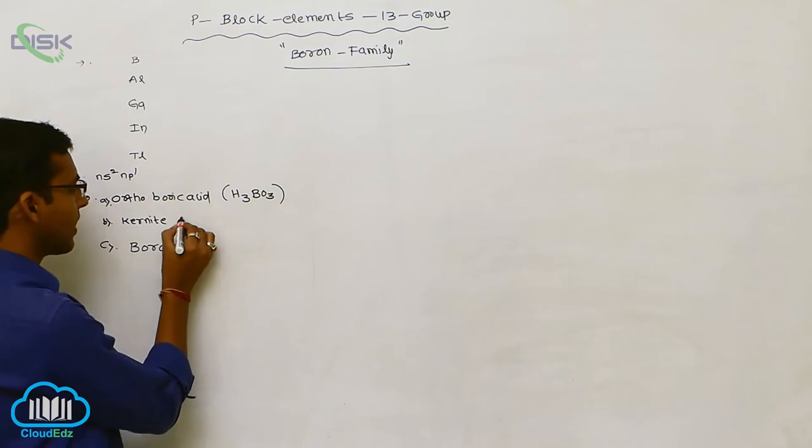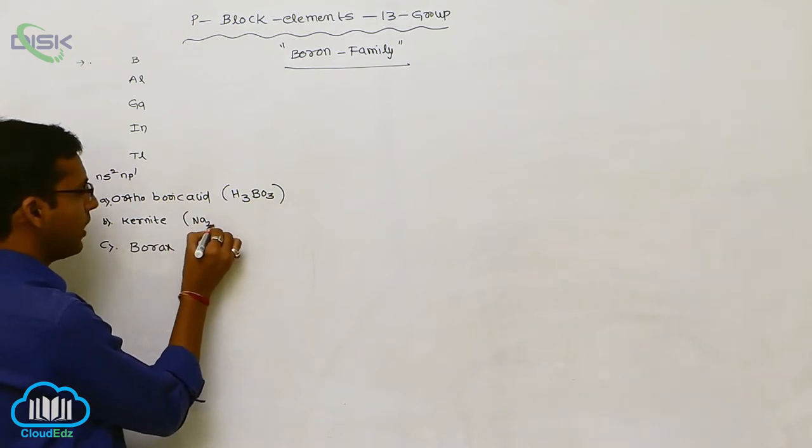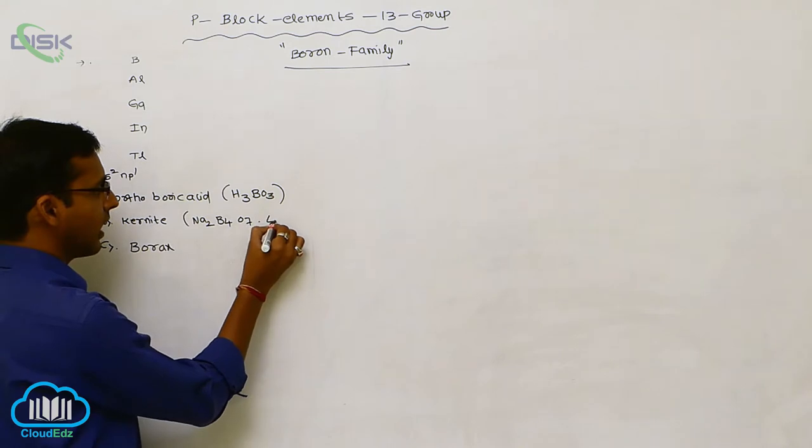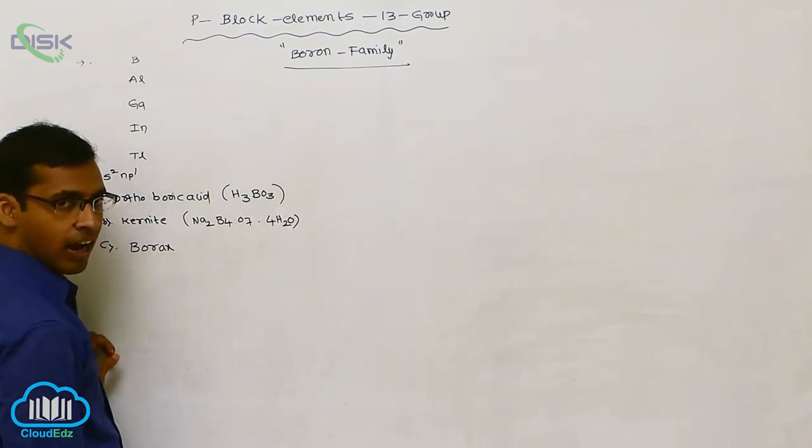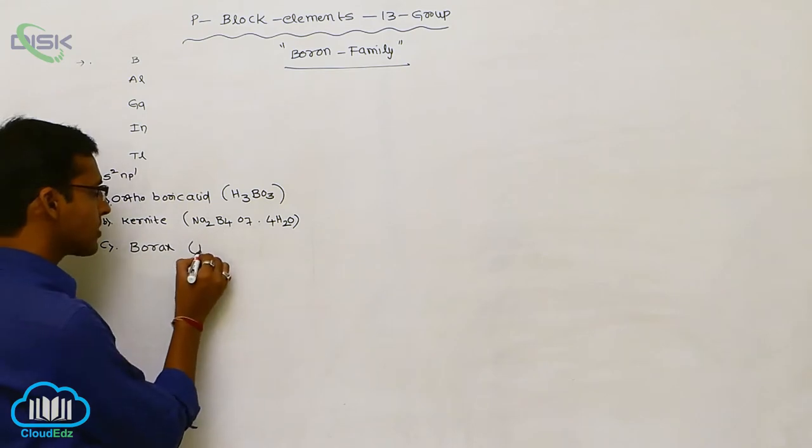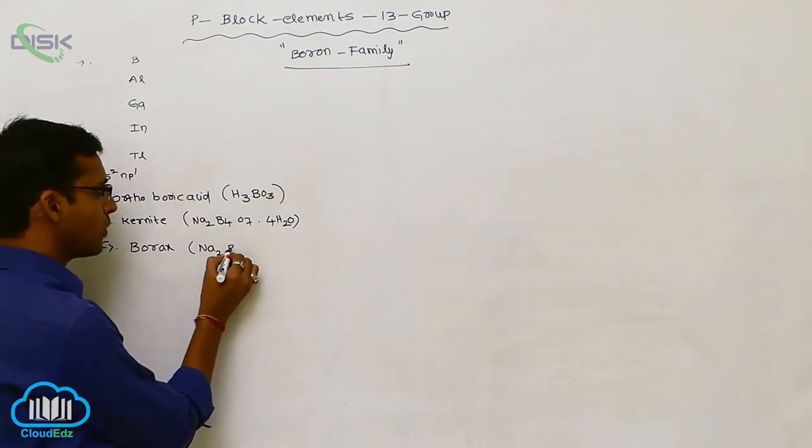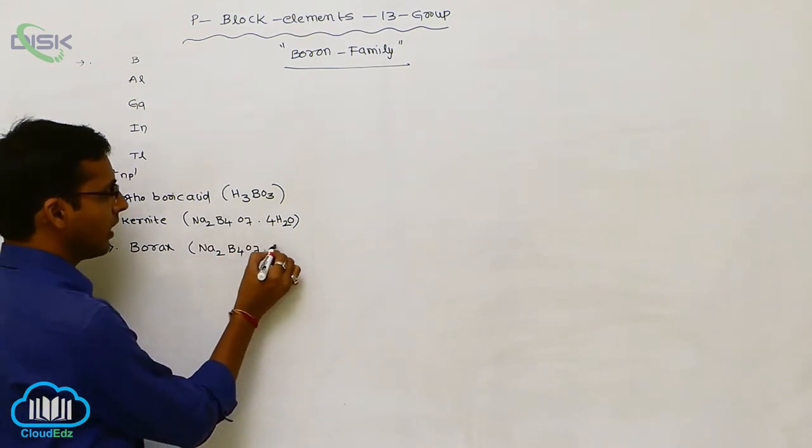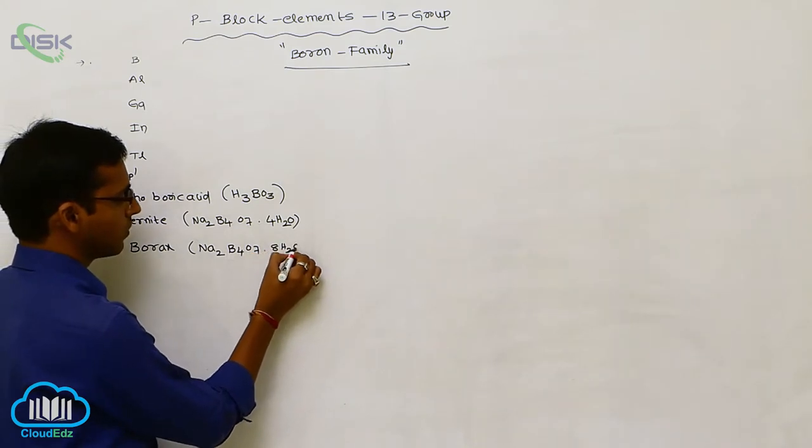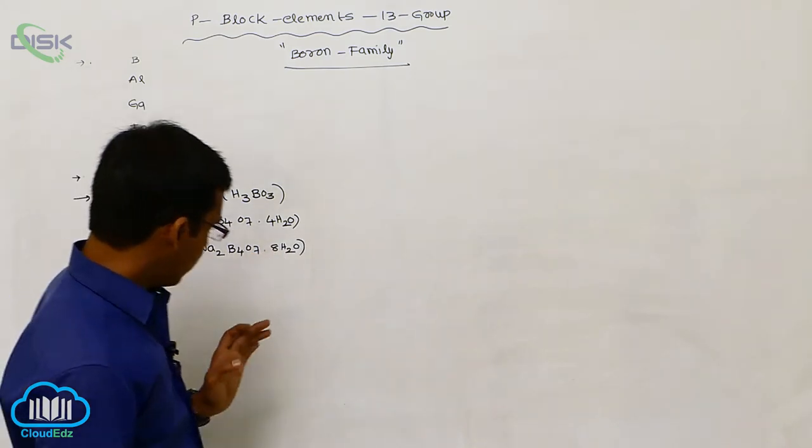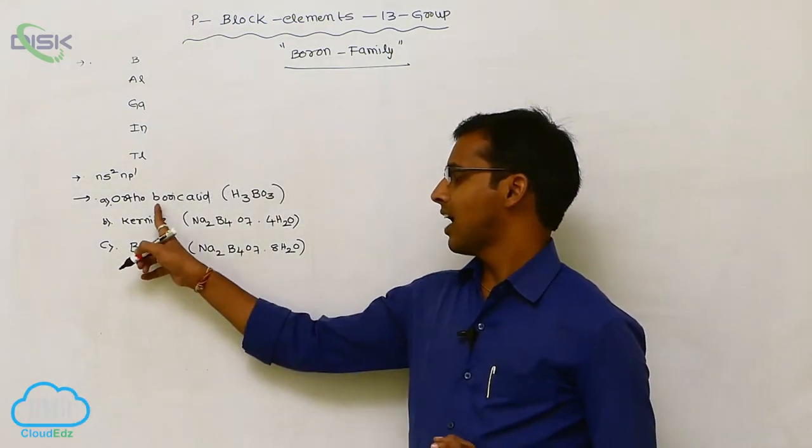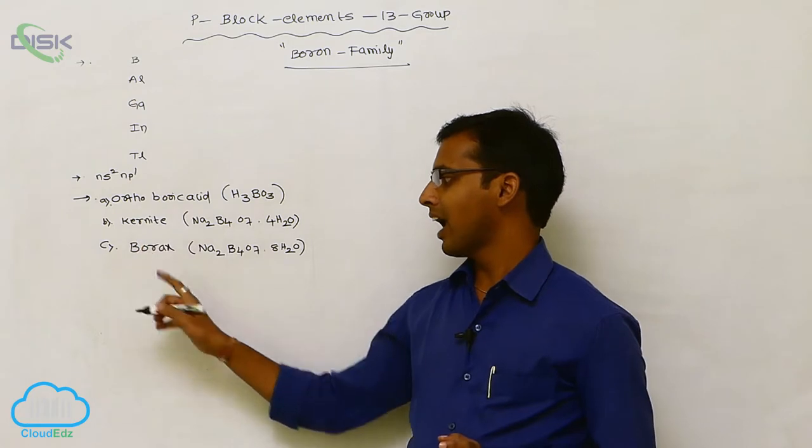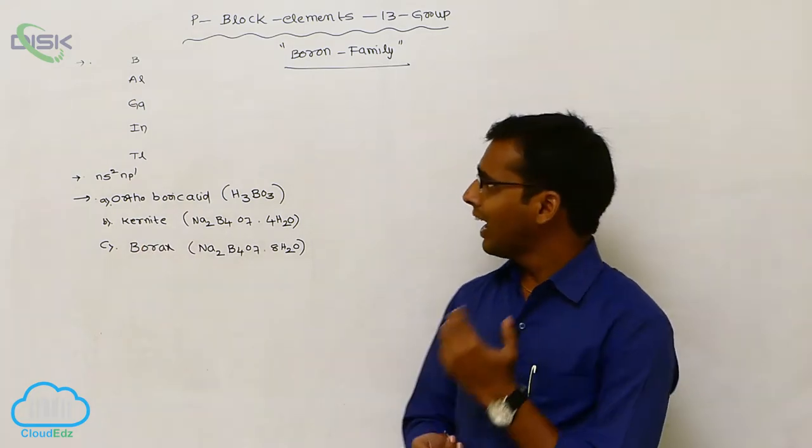Kernite formula is Na2B4O7 containing 4H2O tetrahydrate. Borax formula is Na2B4O7·8H2O. These are the available forms of boron as orthoboric acid, kernite, and borax.